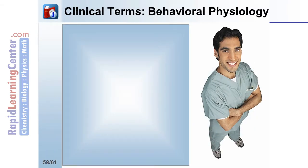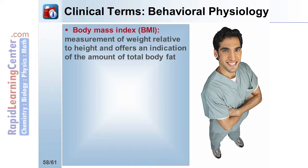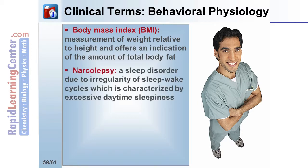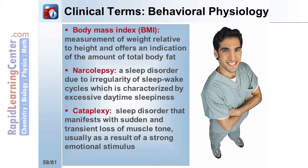To close out this tutorial, here are some medical terms associated with behavioral physiology. The body mass index, or BMI, is a measurement of weight relative to height and offers an indication of the amount of total body fat. Narcolepsy is a sleep disorder due to irregularity of sleep-wake cycles, characterized by excessive daytime sleepiness such that those affected fall asleep at inappropriate times, such as at work or at school. The patient's narcoleptic and night sleep cycles start off with REM sleep and hallucinations may occur just as they fall asleep or just as they waken. And cataplexy is an associated disorder that manifests with sudden and transient loss of muscle tone, usually as a result of a strong emotional stimulus.